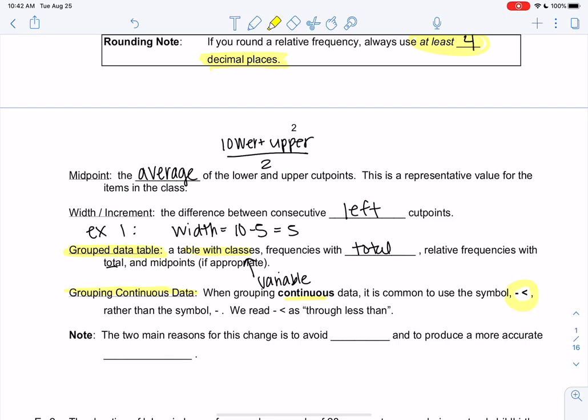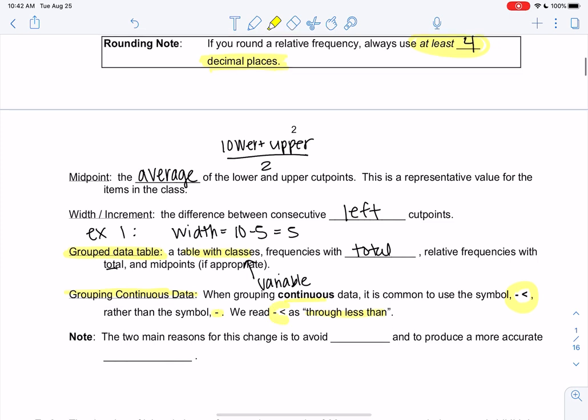When we want to group continuous data, which we will see in the next video, we're going to use a new symbol. So we'll see that in the next video. And that symbol is read as through less than. So it means we're going to get really close to the number, but not quite. So wait to the next video to see that. But we're replacing the dash with this new symbol. And the main reason for this change is to avoid gaps and to produce a more accurate midpoint. So we'll check that out in the next video.